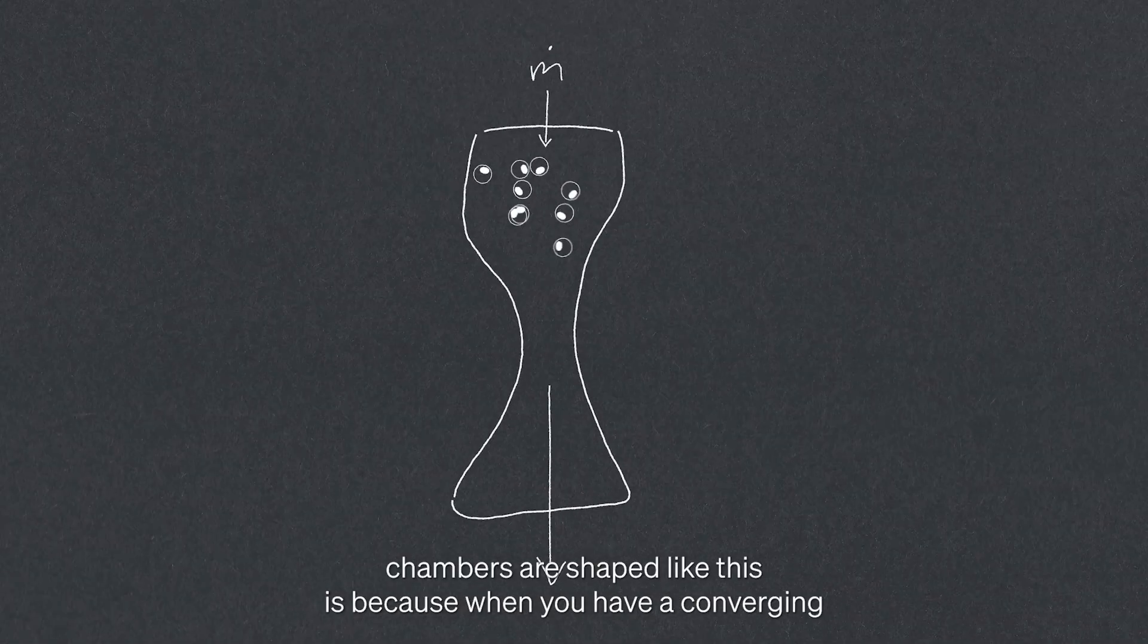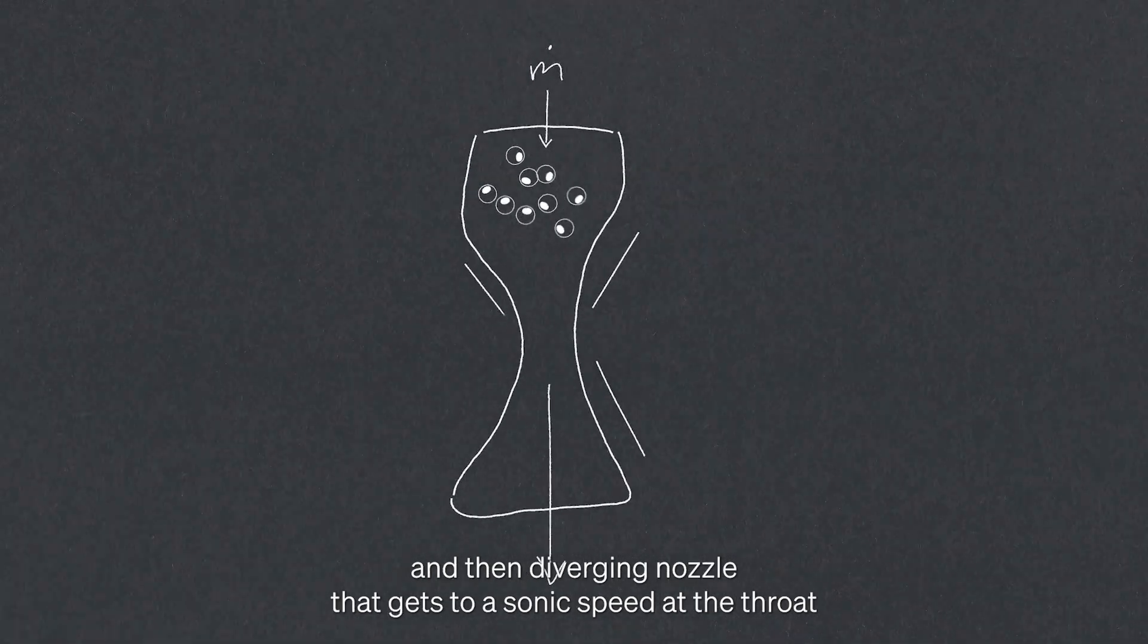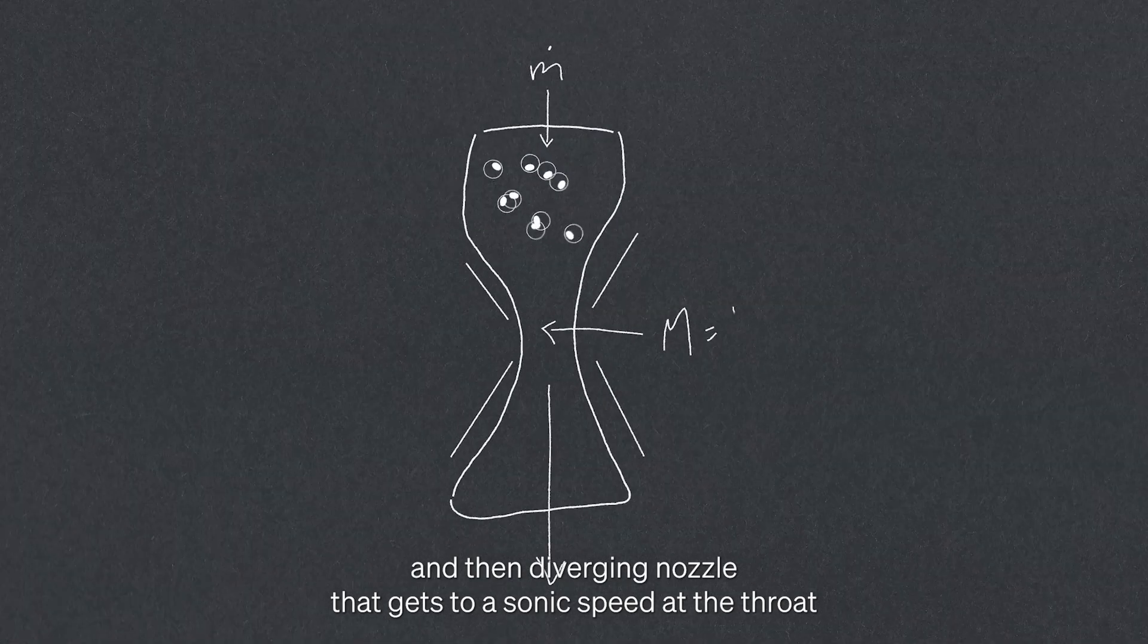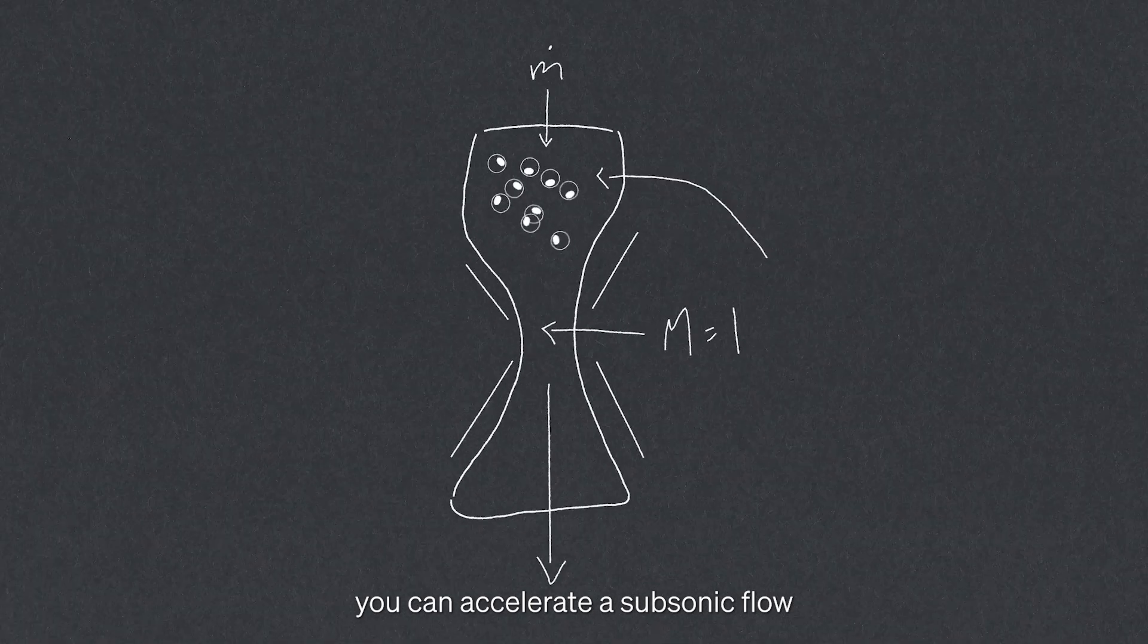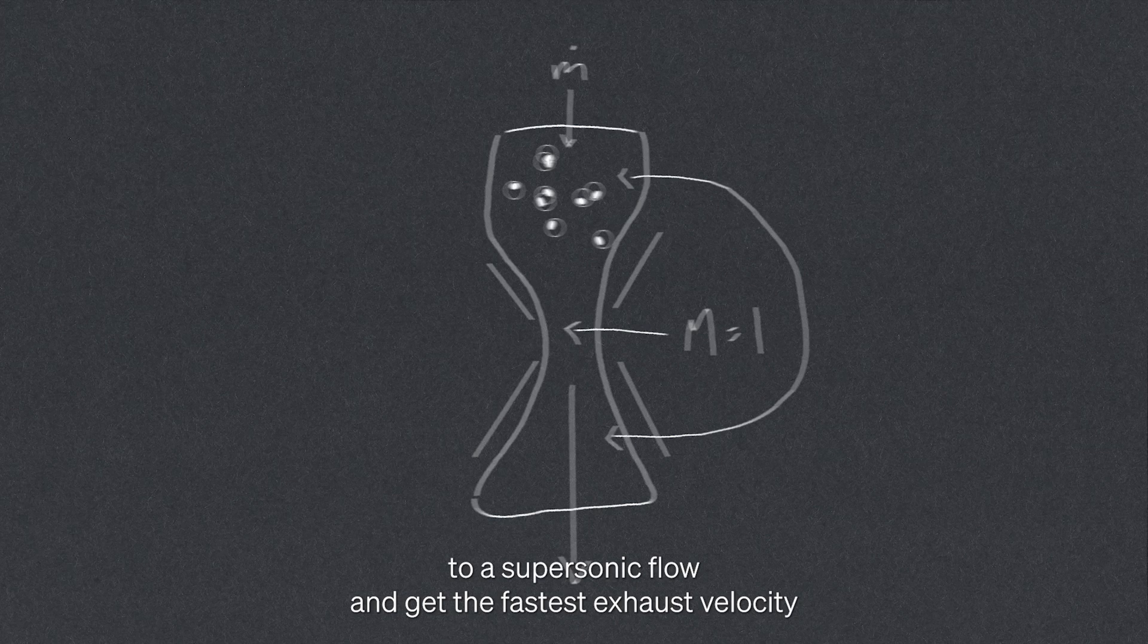The reason combustion chambers are shaped like this is because when you have a converging and then diverging nozzle that gets to sonic speed at the throat, where the Mach number equals one, you're at the speed of sound. You can accelerate a subsonic flow to a supersonic flow and get the fastest exhaust velocity.